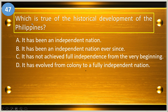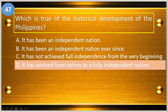Number forty-seven: which is the historical development of the Philippines? A, it has been an independent nation; B, it has been an independent nation ever since; C, it has not achieved full independence from the very beginning; and D, it has evolved from colony to a fully independent nation. The answer is letter D.